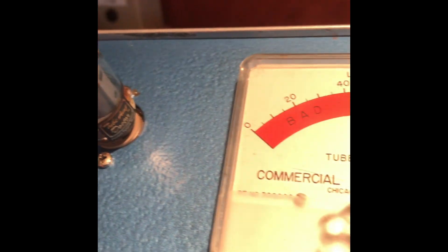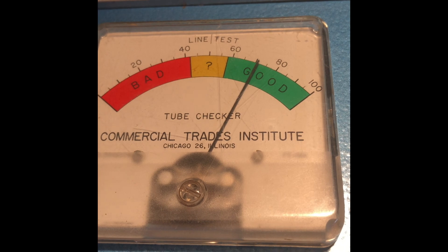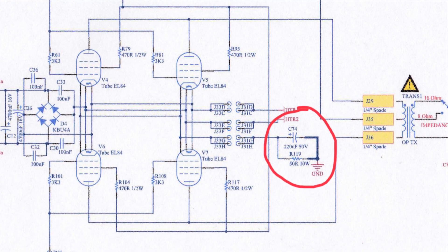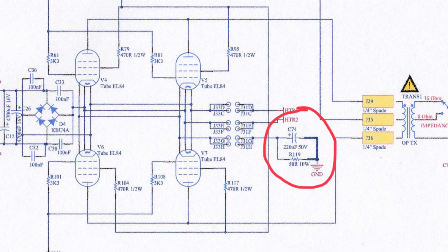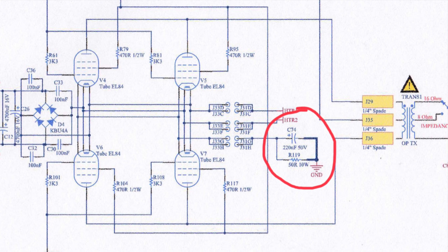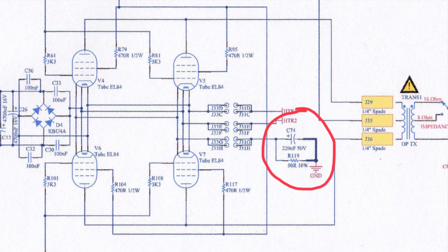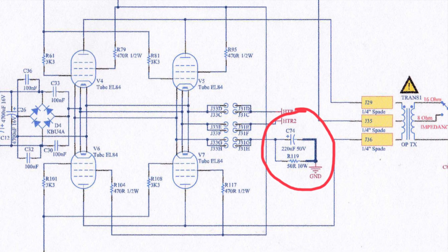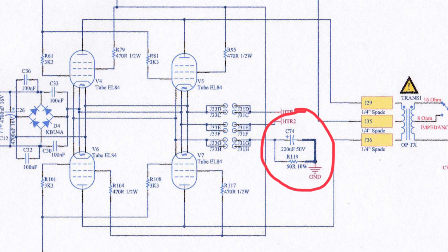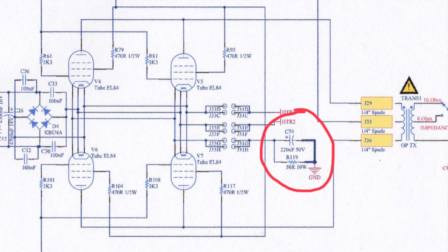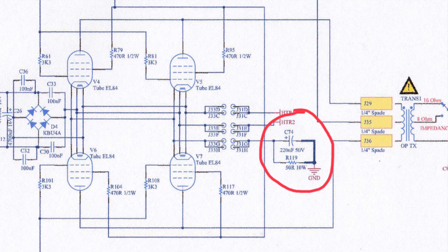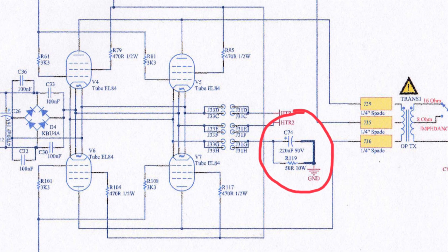So I will show you in a minute how to cool down the bias on these amps. Here is the schematic and you see R119 is the bias resistor on the cathode of the power tubes. And we are going to increase the value of this resistor to cool down the bias.